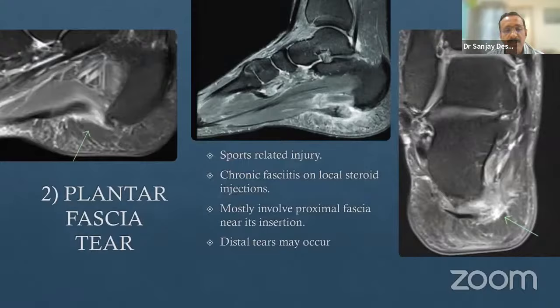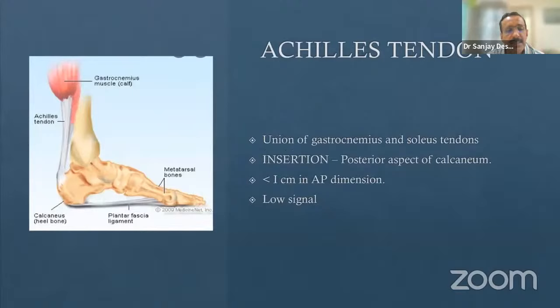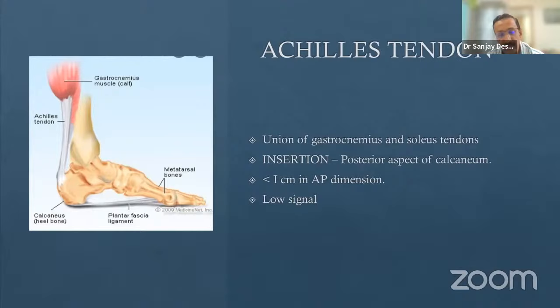The Achilles tendon is formed by the union of the gastrocnemius and soleus muscle-tendon units into a solitary tendon. It is a long tendon that is relatively avascular over a long length, making it amenable to degenerative changes and tears. It inserts over the posterior aspect of the calcaneum approximately at the mid portion. Bony spurring at this region is correctly termed enthesopathy or posterior calcaneal enthesopathy, not a posterior calcaneal spur.